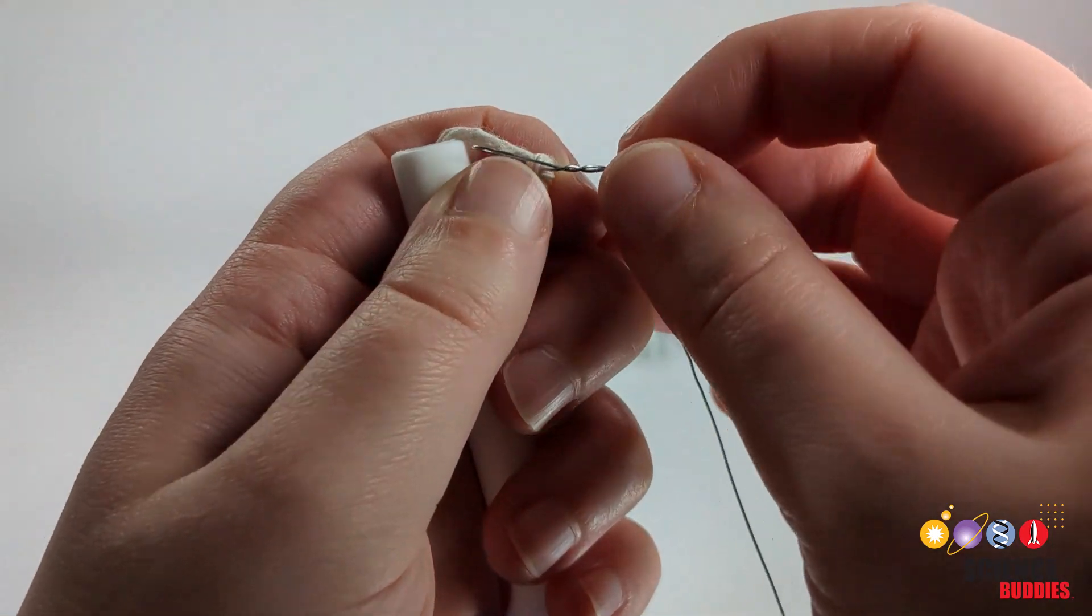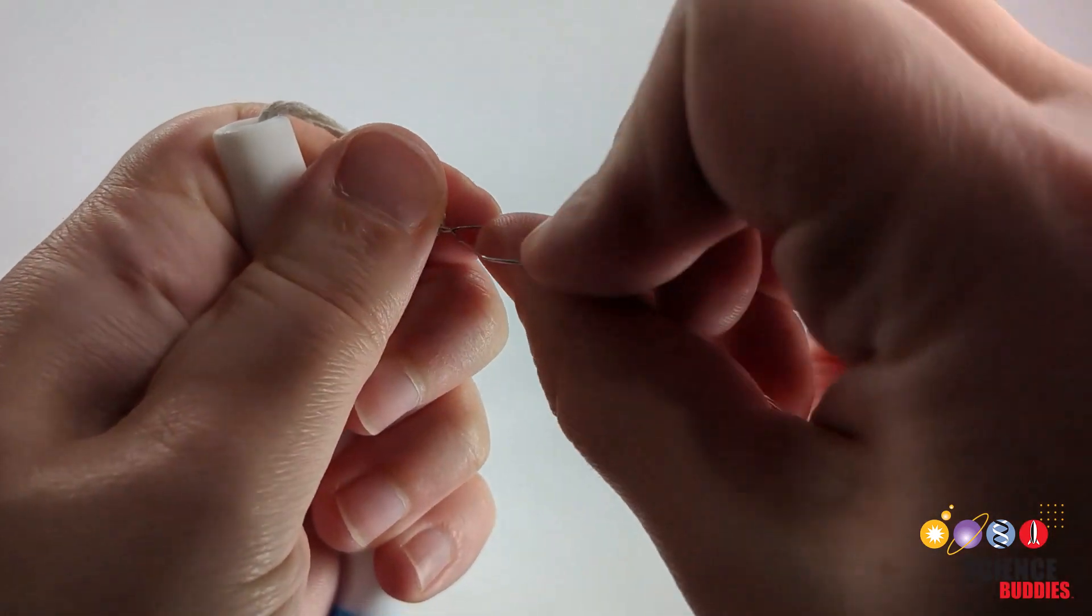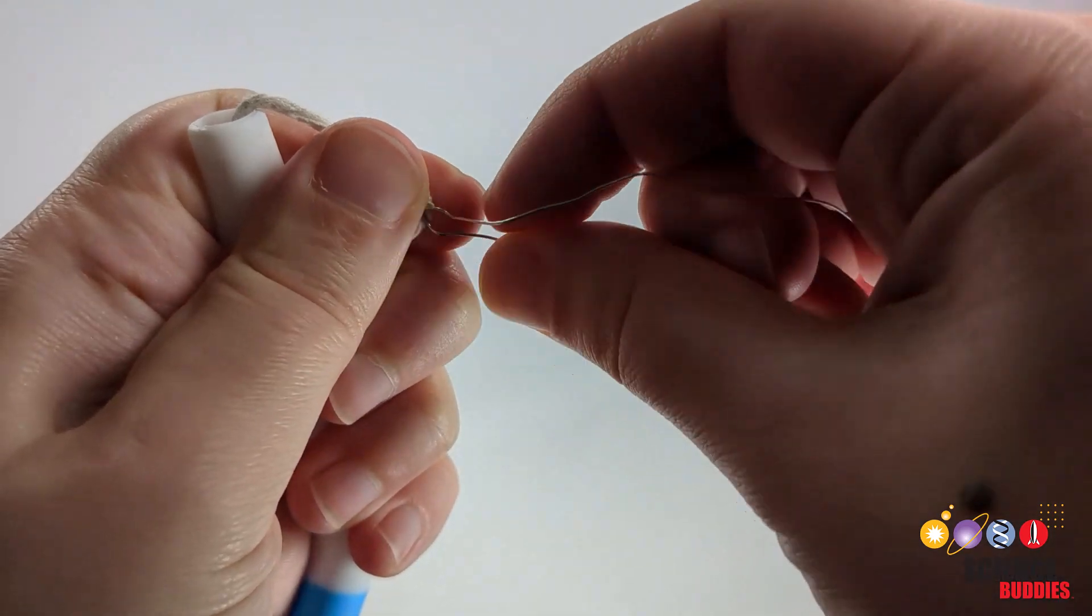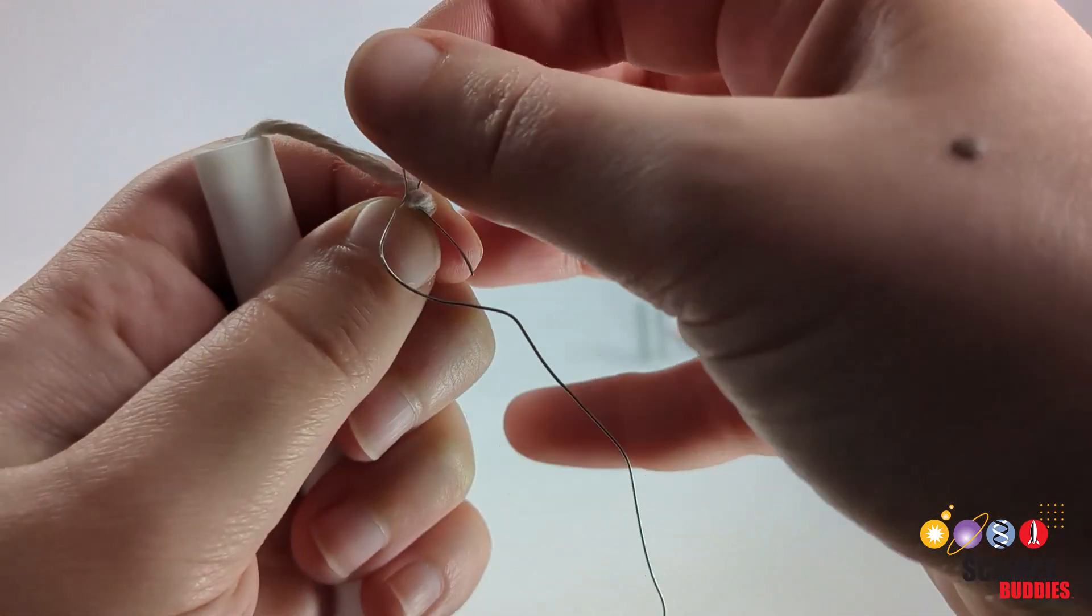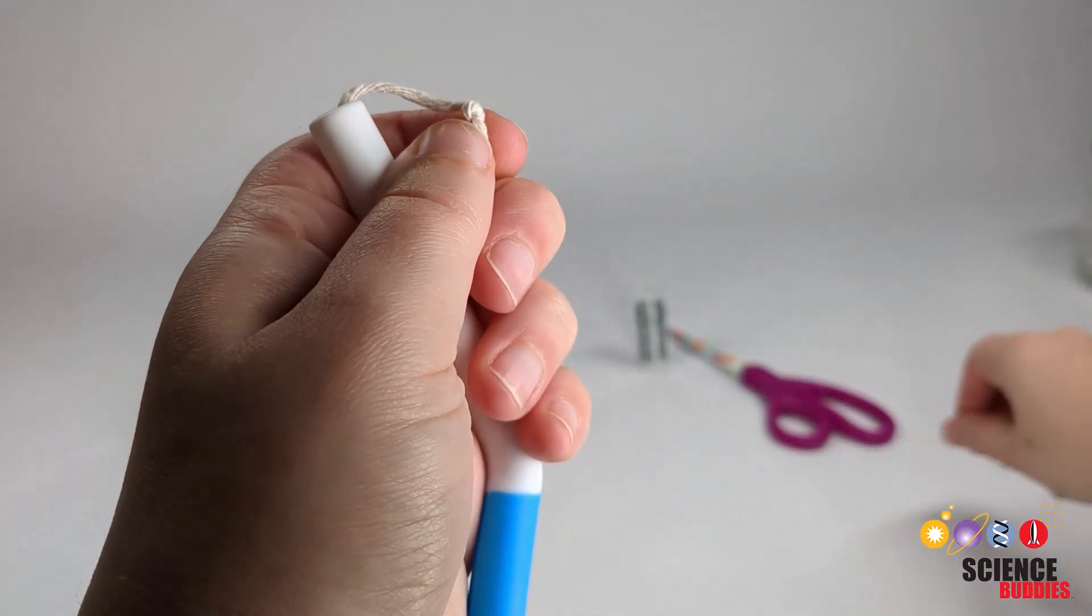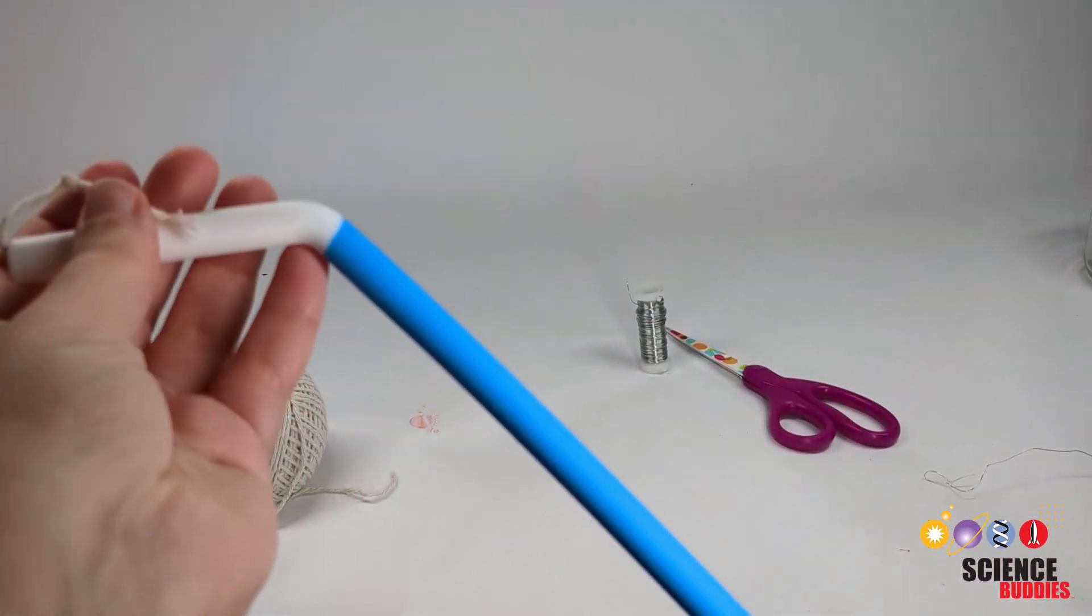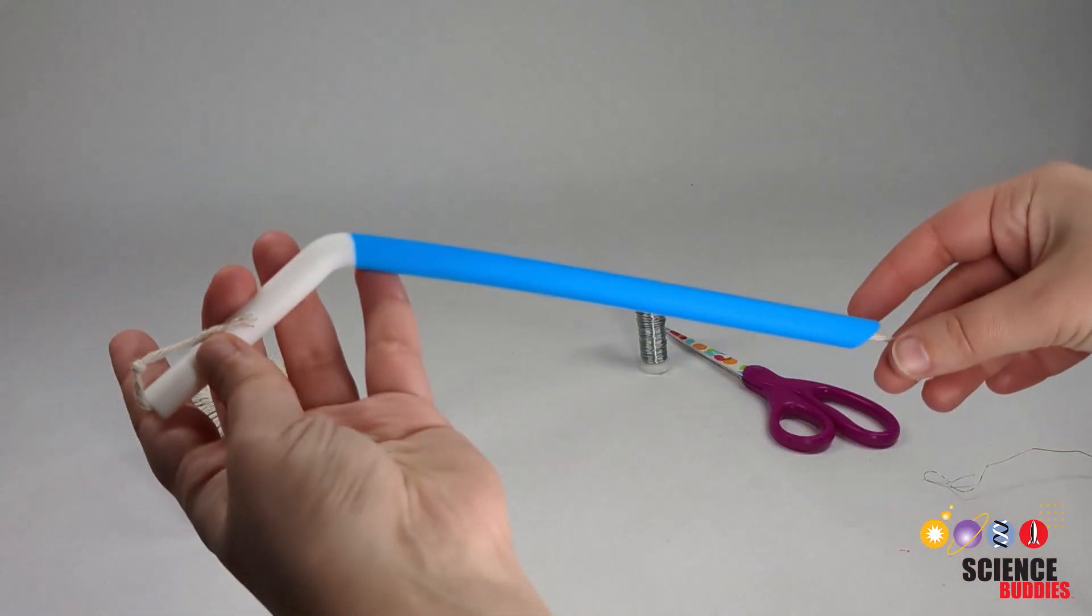While holding onto the cotton string on the opposite end of the straw, gently pull the wire out from the inside. Then, carefully untie the wire from the cotton string. With the cotton string overhanging both ends of the straw, the cotton wick will draw up water to drip onto the soil.